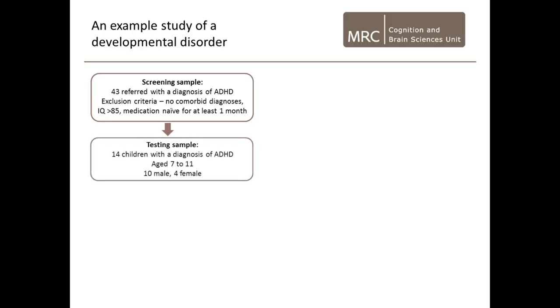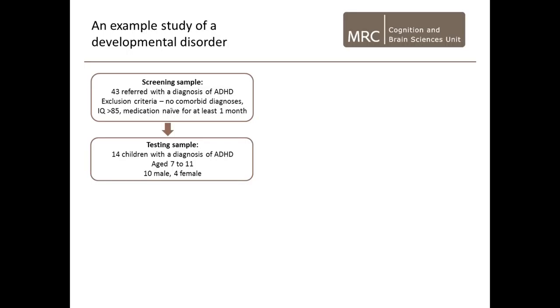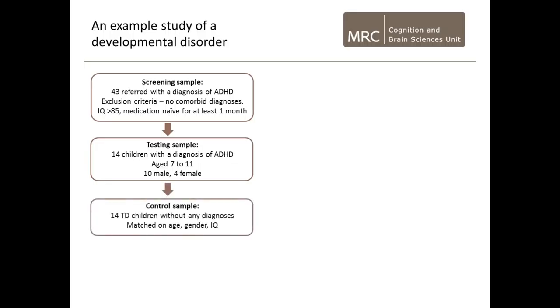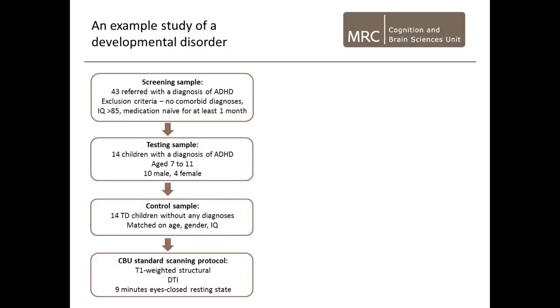So we thought we would embark on a study looking at the neural correlates of ADHD. We went to our friendly clinician and they referred us — gave us the details of a group of 43 children with ADHD. We had some exclusion criteria: the children couldn't have any comorbid diagnoses, we didn't want any children with ASD-like symptoms or anything else. We wanted very pure ADHD kids. They had to have IQ within the normal range and we wanted them to be off medication. We wound up with a testing sample of 14 children in the right age range.